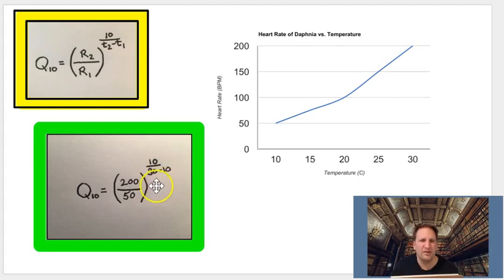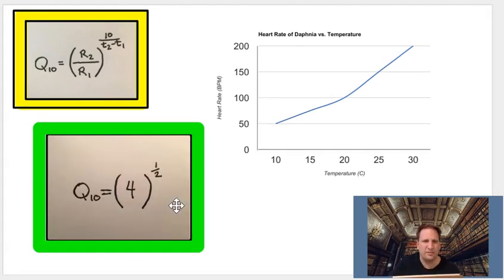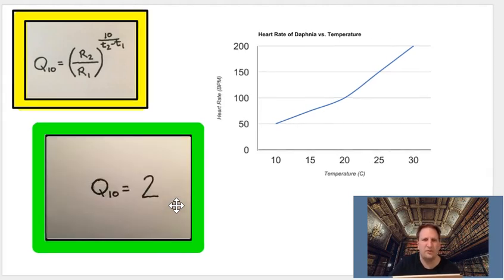10 over 30 minus 10 is going to be 10 divided by 20, which can be reduced to one half. Now that's a step that you can do, but don't worry, because we're about to look at how we could do it a little bit easier in just one second. So the answer is going to be 4 raised to the one half power. So the Q10 is equal to 2.